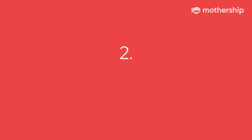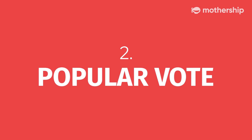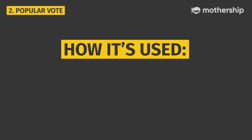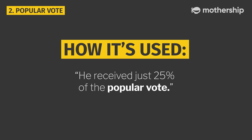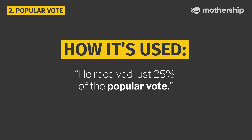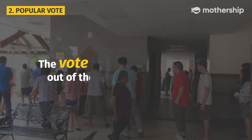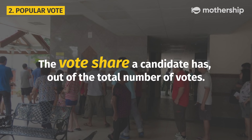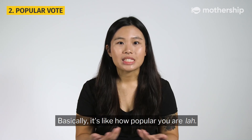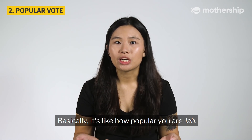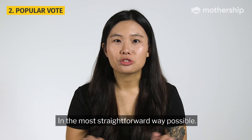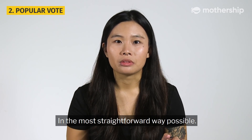Number 2: Popular vote. How it's used: He received just 25% of the popular vote. It's the vote share a candidate has out of the total number of votes — basically, how popular you are, in the most straightforward way possible.